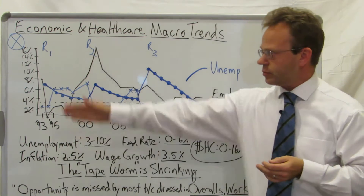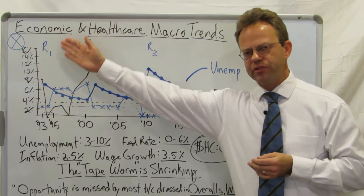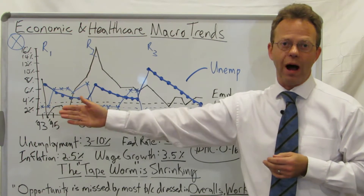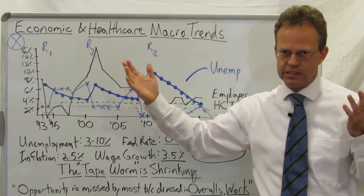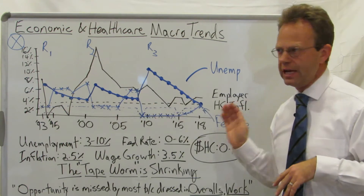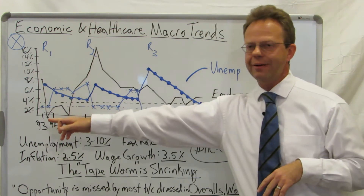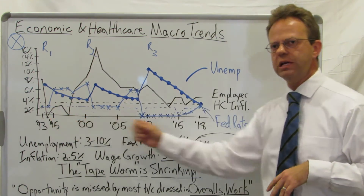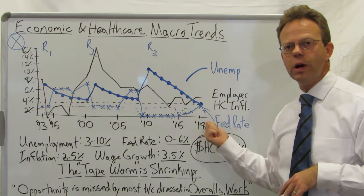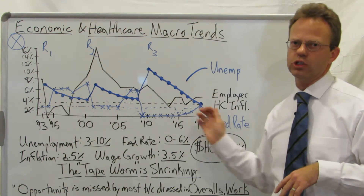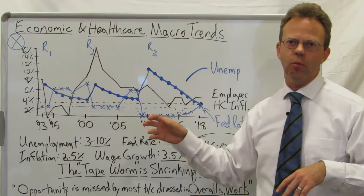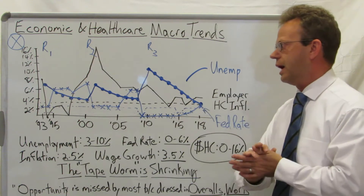We have percentages here on the y-axis — percentage increases of various things. And then we have time here on the x-axis, starting in about 1993 up to 2018, so we're talking almost 25 to 30 years.